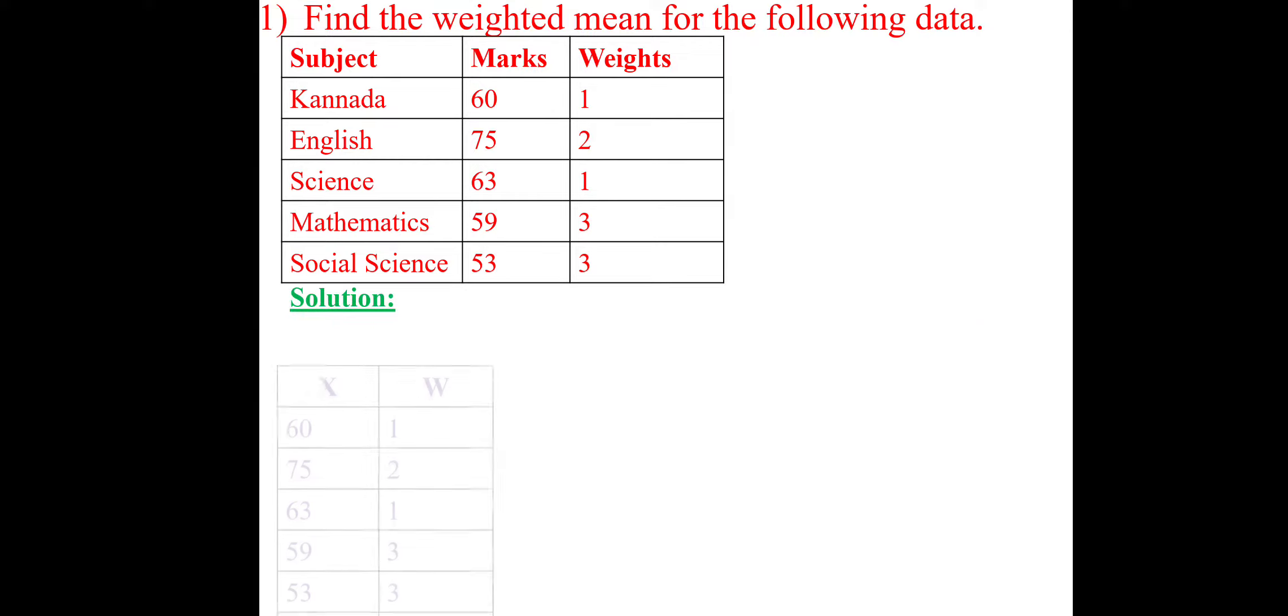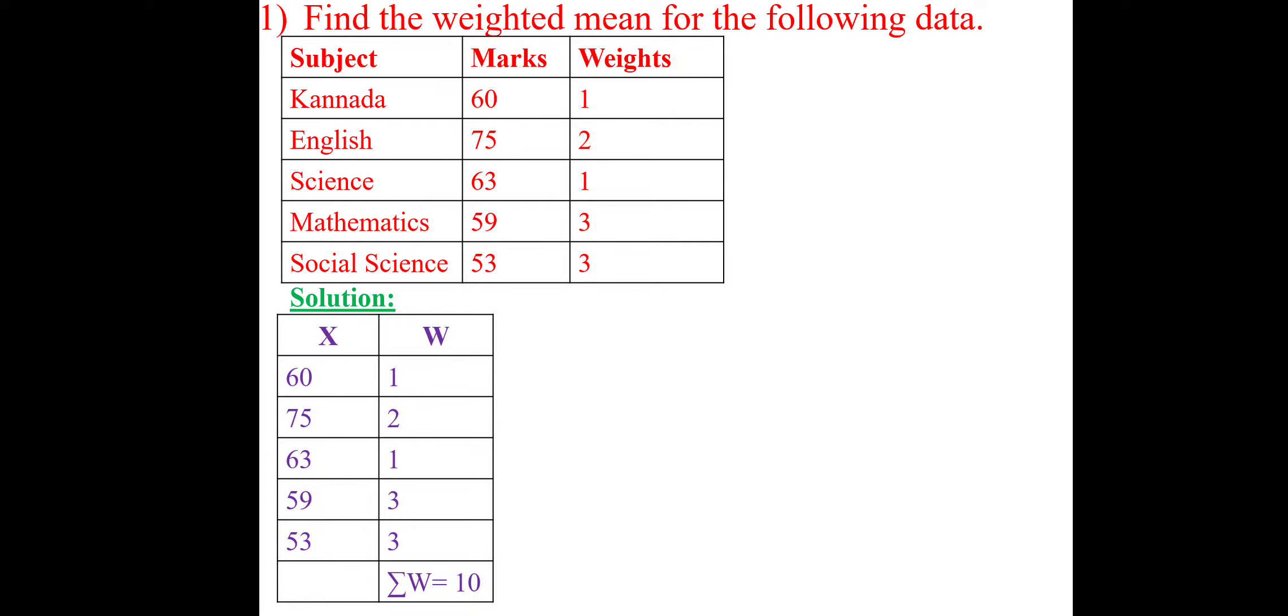So, this example will be written as: X will be the given marks. The weightage will be W. According to that, we have written. Total weightage 1 plus 2 plus 1 plus 3 plus 3 is 10. Then, you have to find out W into X. 1 into 60 is 60. 2 into 75 is 150. 1 into 63 is 63. 3 into 59 is 177. 3 into 53 is 159. Summation WX equal to 609.